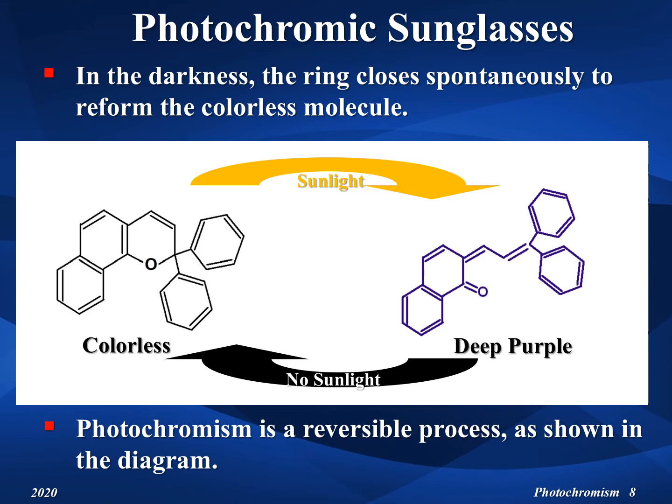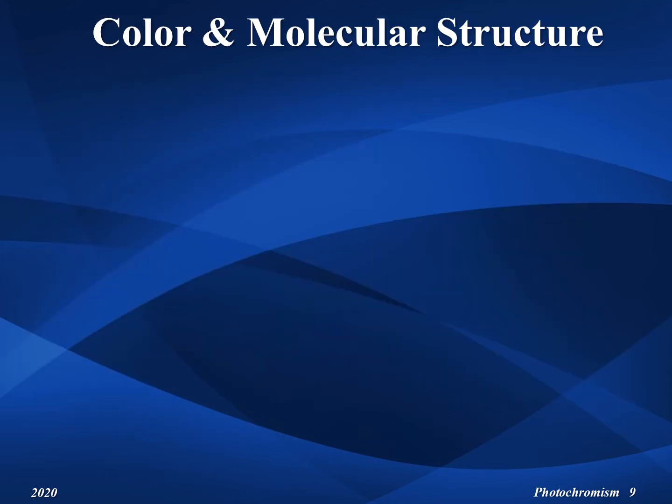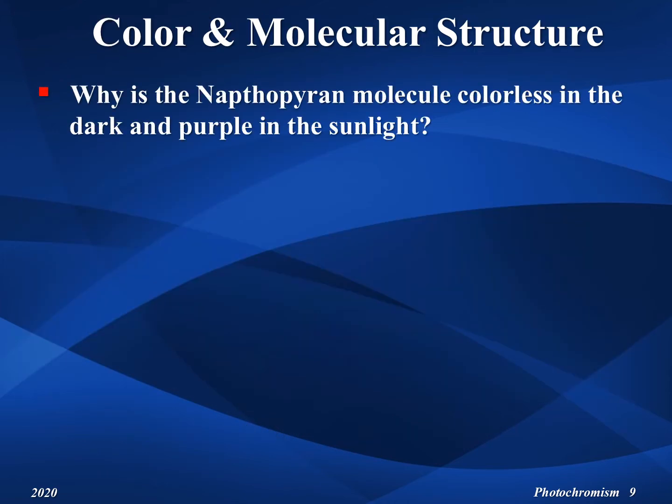Therefore, photochromism is a reversible process. In sunlight it forms the dark purple form of the molecule, while in the dark the molecule changes back to the colorless form. Now let us ask the question: why is the naphthopyran molecule colorless in the dark and purple in sunlight?